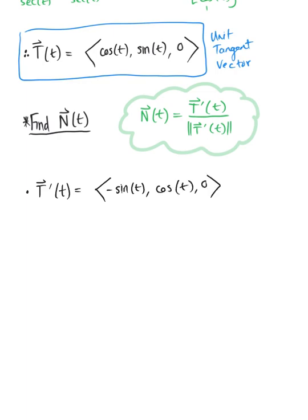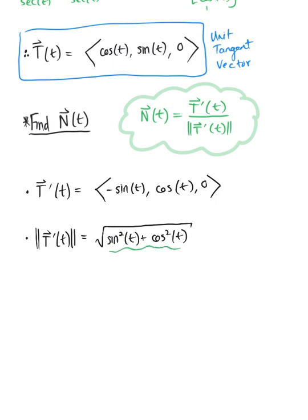There are no scalar multiples, so we go right ahead and find the magnitude. Putting this into our distance formula, we have the square root of (−sin t)² + cos²(t) + 0², which gives us sin²(t) + cos²(t). We see the Pythagorean identity again — this equals the square root of 1, which is just 1.